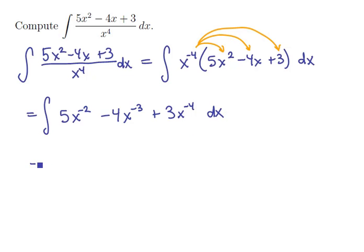Now that this has been expanded, we can break this up into 3 separate pieces. 5 times an antiderivative minus 4 times another antiderivative plus 3 times a third antiderivative, and we'll just do them separately.